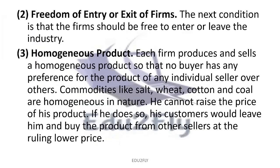Next is the homogeneous product. Every firm produces and sells homogeneous products so that no buyer has any preference for the product of any individual seller over the others. Homogeneous product means that all firms sell the same product. Commodities like salt, wheat, cotton, and coal — all these markets are of homogeneous nature.